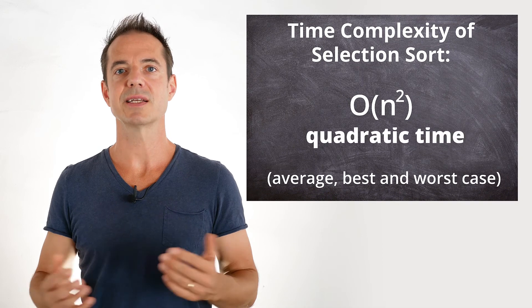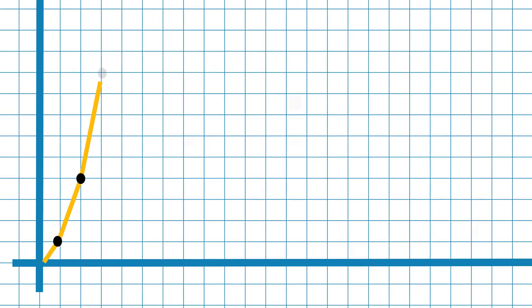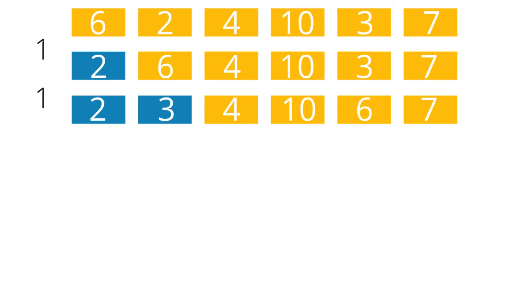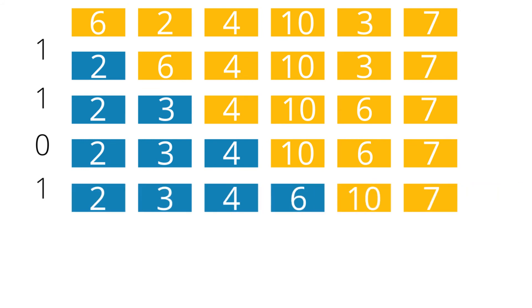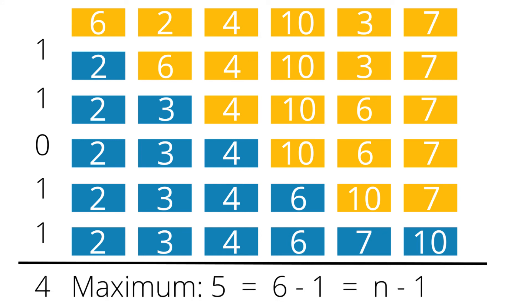O(n²) is also known as quadratic time, and that means the time needed to sort a list of elements grows proportional with the squared number of elements. When deriving the time complexity, we have considered only the comparison operations. But what about the swapping operations? In each step, we swapped exactly one element, unless the smallest element was already on the left of the unsorted part. So we have at most n minus 1 swap operations. This means that even if the swap operation is significantly more expensive than the comparison, if n is sufficiently high, the swap operation will no longer be relevant, and therefore it is not taken into account in the time complexity notation.